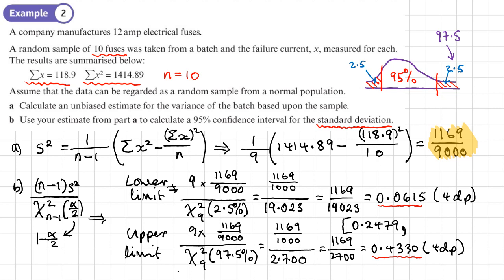And again, we'll work out the exact value of the other square root, 1169 over 2700. That gives us 0.65, and then it's 7, and then 9, 9, 9. So let's call it 0.6580. So there's our confidence interval for our standard deviation: (0.2479, 0.6580).